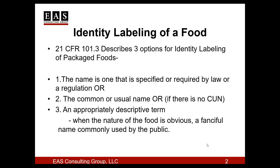In Section 21 CFR 101.3, FDA allows three options for labeling the identity of a food product. First is where a name is one specified by law or regulation, such as a standard of identity — an example of that would be Parmesan cheese. The second is for a common and usual name of a food, and an example of that would be something like a cracker or a tortilla.